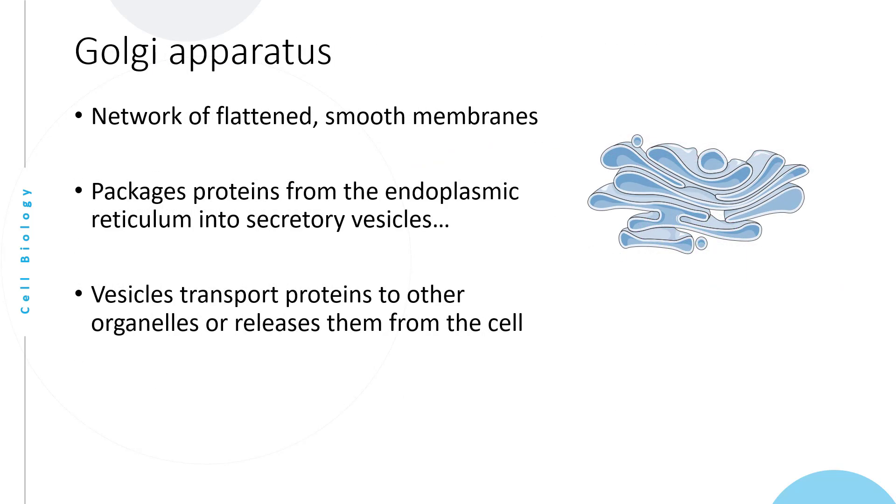The third organelle is the Golgi apparatus. It is a network of flattened, smooth membranes found next to the endoplasmic reticulum. It packages proteins from the endoplasmic reticulum into secretory vesicles. These vesicles transport proteins to other organelles or release them from the cell.